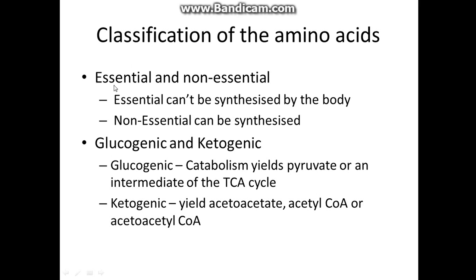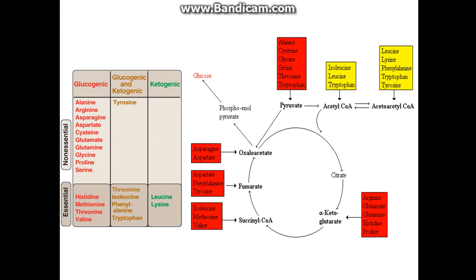As I said, there are essential and non-essential amino acids, and then two further categories: glucogenic and ketogenic. Essential amino acids can't be made by the body — you have to get them in your diet — and non-essential can be synthesized from other things in your body. Glucogenic catabolism yields pyruvate or an intermediate of the TCA cycle, and ketogenic yields acetyl-CoA or acetoacetyl-CoA. As you can see, there are only two purely ketogenic compounds — quite rare — a lot of glucogenic ones, and a fair few that are both glucogenic and ketogenic.